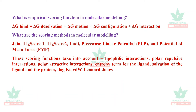Empirical scoring functions use the formula: delta G bind equals contributions from desolvation, motion, configuration, and interaction terms. Scoring methods include LigScore1, LigScore2, LUDI, and piece-based linear potential. These account for lipophilic interactions, polar repulsive interactions, polar attractive interactions, entropy term for ligand solvation, inhibitory constant, and Leonard-Jones van der Waals interactions.